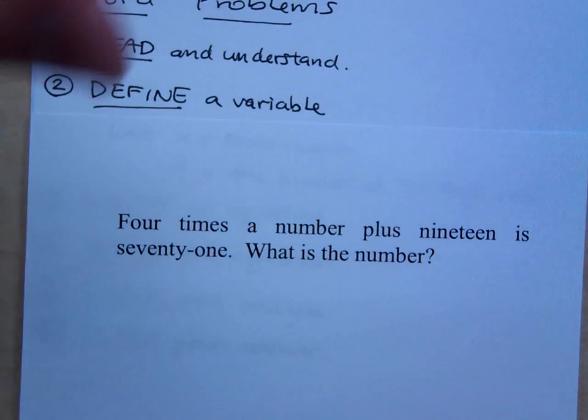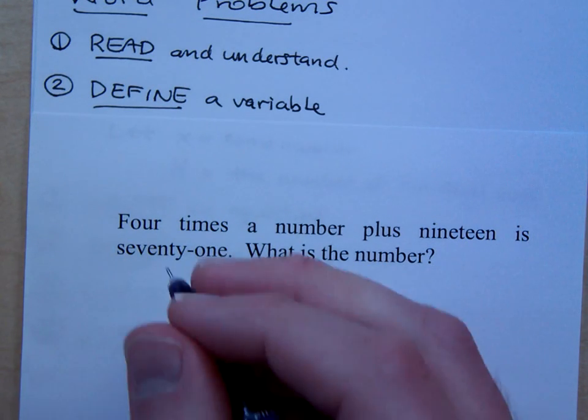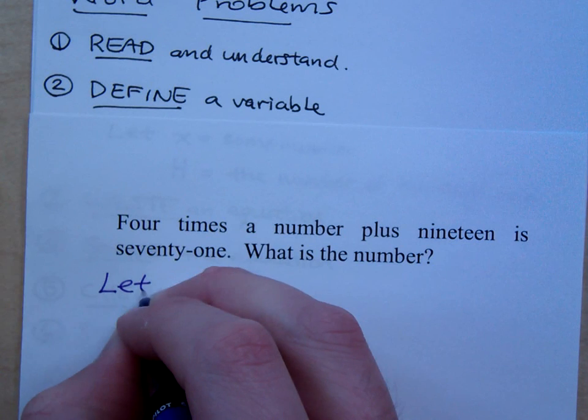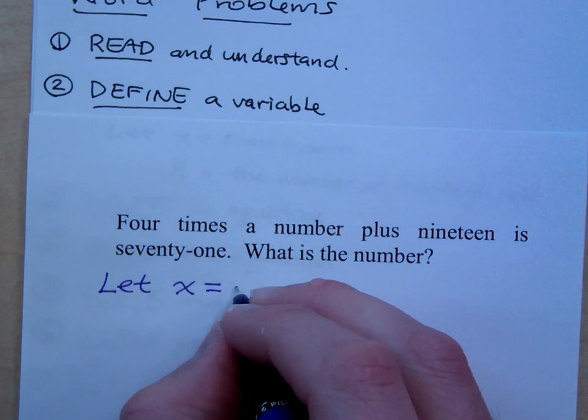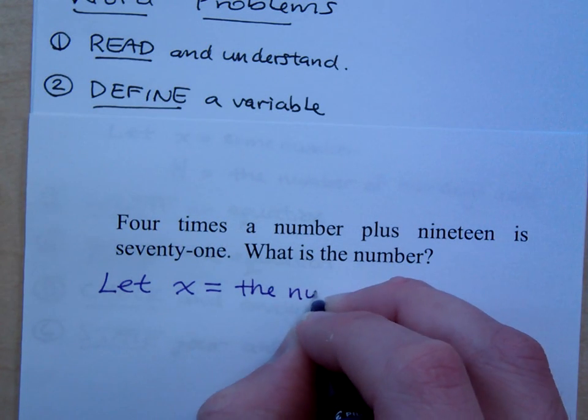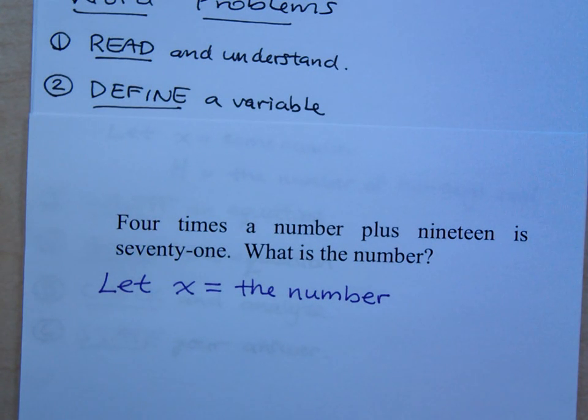The second step says define a variable. What variable would you like to use? What's your favorite variable? X, right? So what we do here is that we say, we say that we're going to use X. So we'll say let X equal, and what is X representing in this problem? The number, right? And if it makes you feel better to say the missing number you can, but you could just say in this particular problem that X is equal to the number. That way, when I'm working my equation, I know that I see X, but I also know that its meaning is the number that I'm looking for.